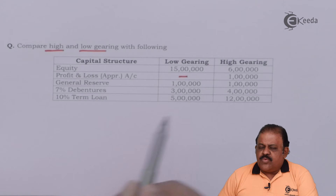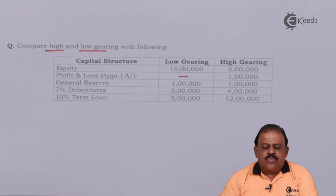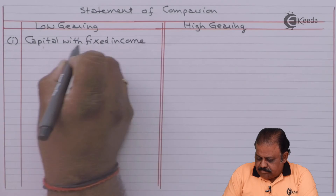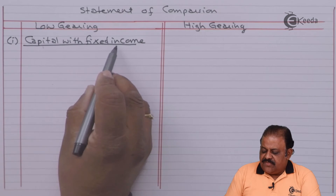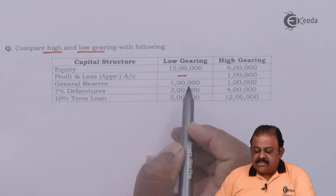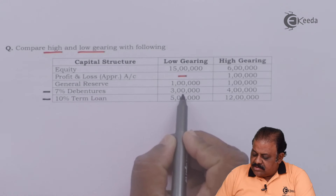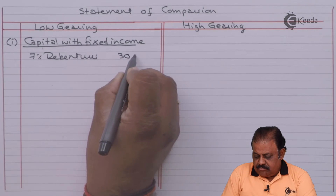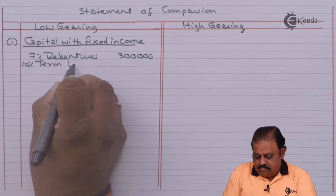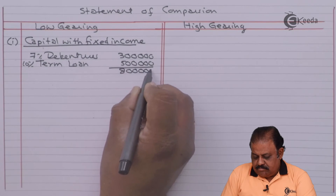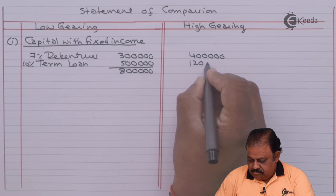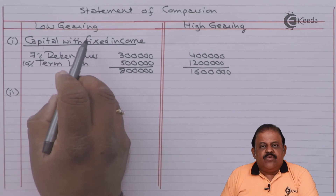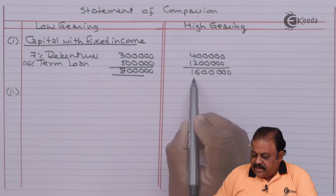Based on these two situations, we can calculate the capital gearing ratio. Capital with fixed income includes: 7% debenture 3 lakhs and 10% term loan 5 lakhs. In case of low gearing, the capital with fixed income totals 8 lakhs; in case of high gearing, it totals 16 lakhs.